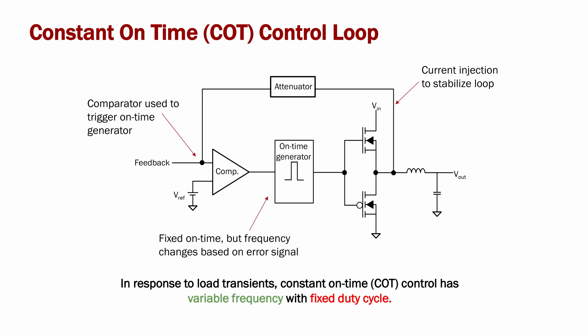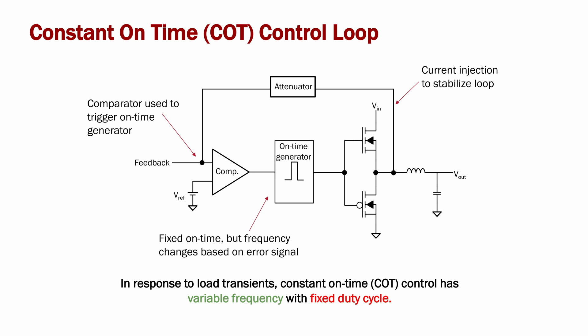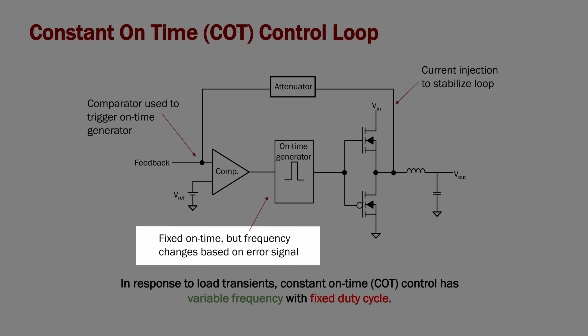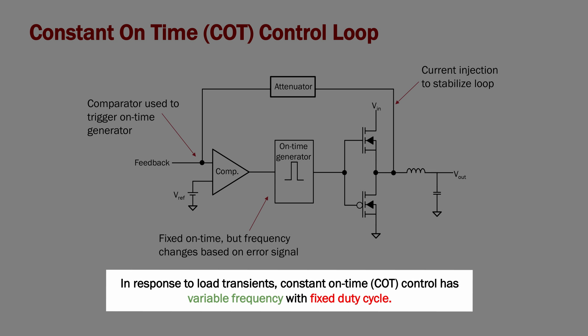On this slide, we are showing the architecture of a constant on-time control loop. A constant on-time control loop consists of a comparator and an on-time generator. When the feedback voltage is lower than the reference, the on-time generator is triggered, and a fixed pulse width signal is sent to the power stage. So a constant on-time is a variable frequency but fixed duty cycle modulator.